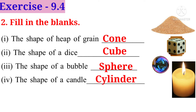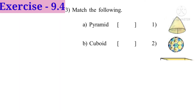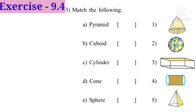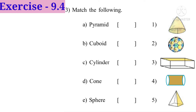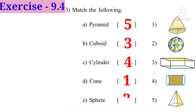The shape of a candy is in the shape of a cylinder. Problem 3: Match the following — left side are shapes and right side are their figures. A: Pyramid matches figure 5. B: Cuboid matches figure 3. C: Cylinder matches figure 4. D: Cone matches figure 1. E: Sphere matches figure 2.